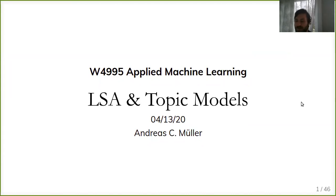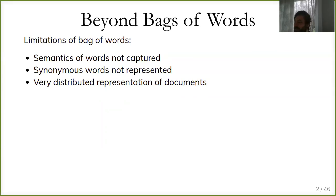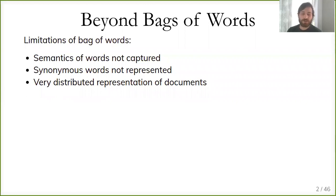Today we'll talk about topic models, latent semantic analysis, and some matrix decomposition methods. The goal is to go a little bit beyond bag of words in representing text data. So far, to represent text data we just used word counts or bag of words, and one of the shortcomings is that the semantics of a word are not really captured. We also ignore word order completely, though we could work around this a bit by using n-grams.